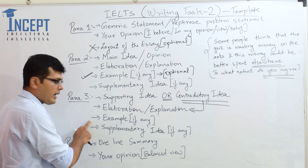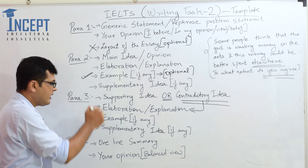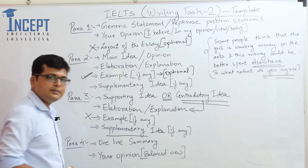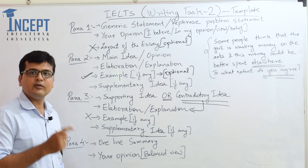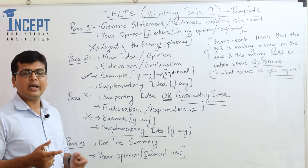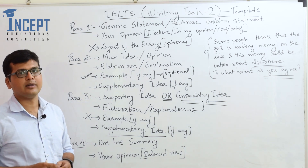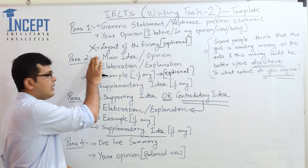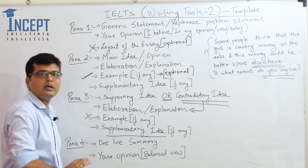After the contradictory idea and its elaboration, you may add an example — but remember, if you already provided one in paragraph 2, you do not need another in paragraph 3. For a supplementary idea, you can write: 'Thus, it is prudent for the government to take care of the immediate and imminent needs of the populace before splurging money on other aspects.' Having covered points for both the positive side as well as the alternate thought, we now move on to the concluding paragraph.